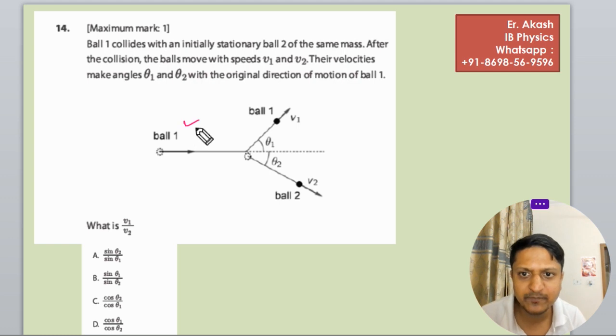So basically there is ball one that is moving towards the ball two. So here is ball two and after the collision ball one goes there and ball two moves here.